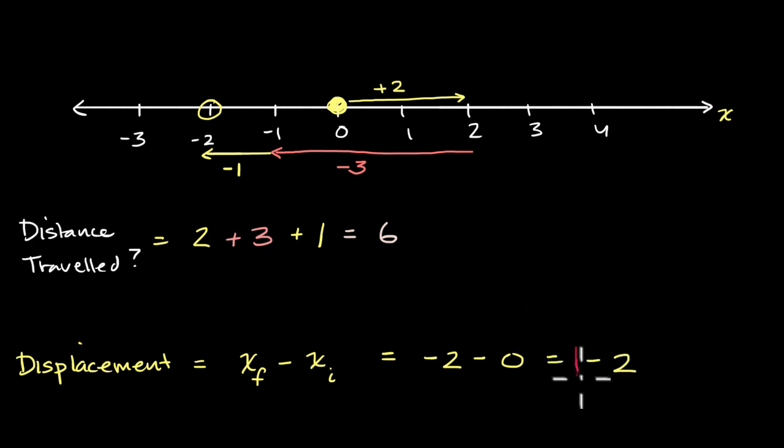So how would we visualize that on our drawing here? Well we started here. Just think about what is your net change in position. You started here and regardless of what your path was, you ended up two to the left. So your displacement is negative two.